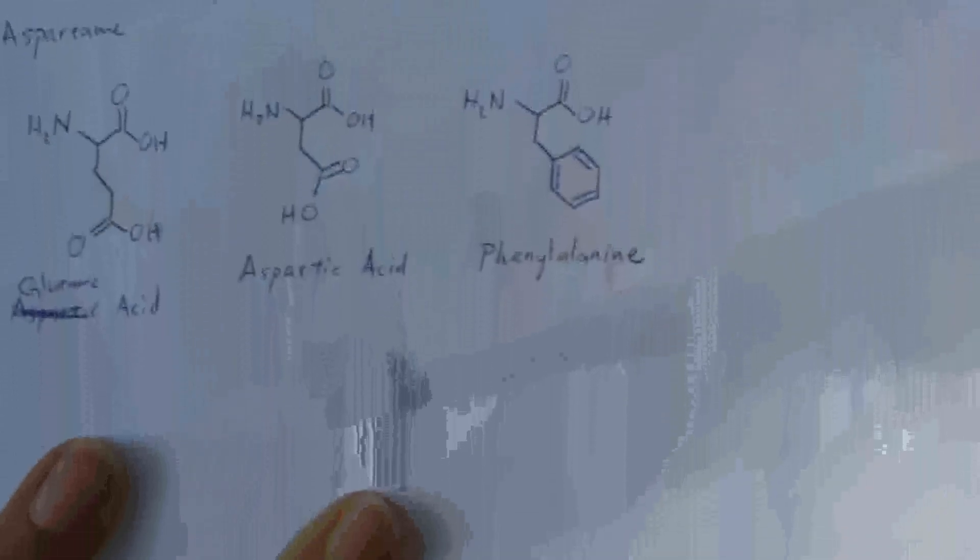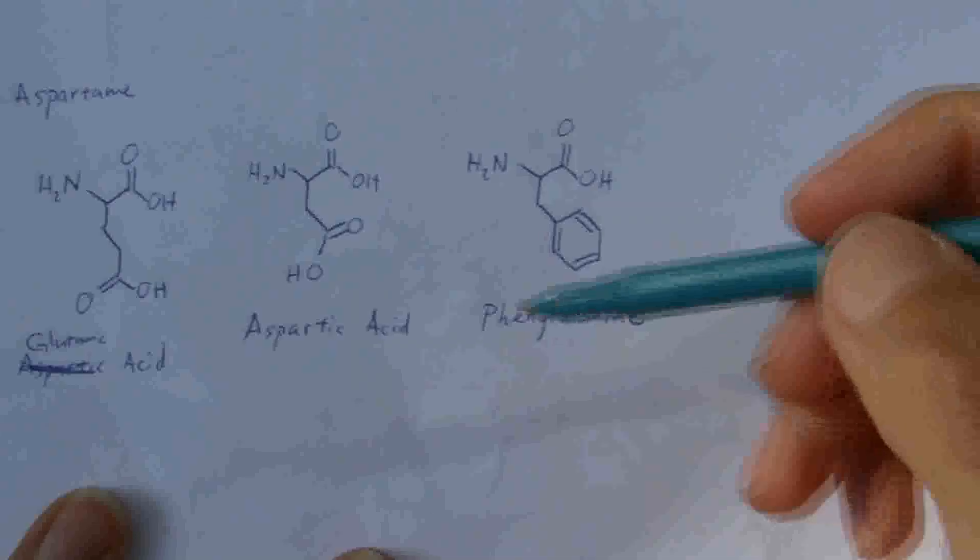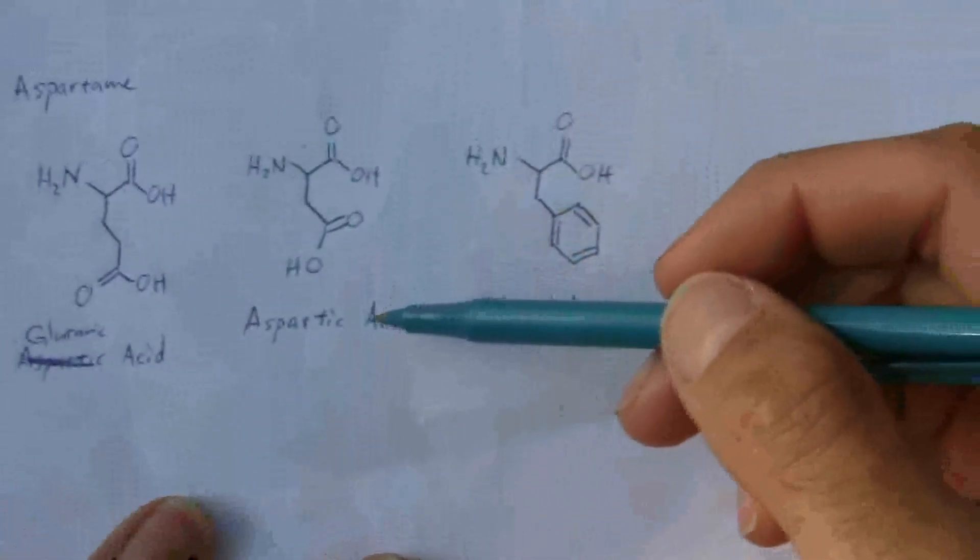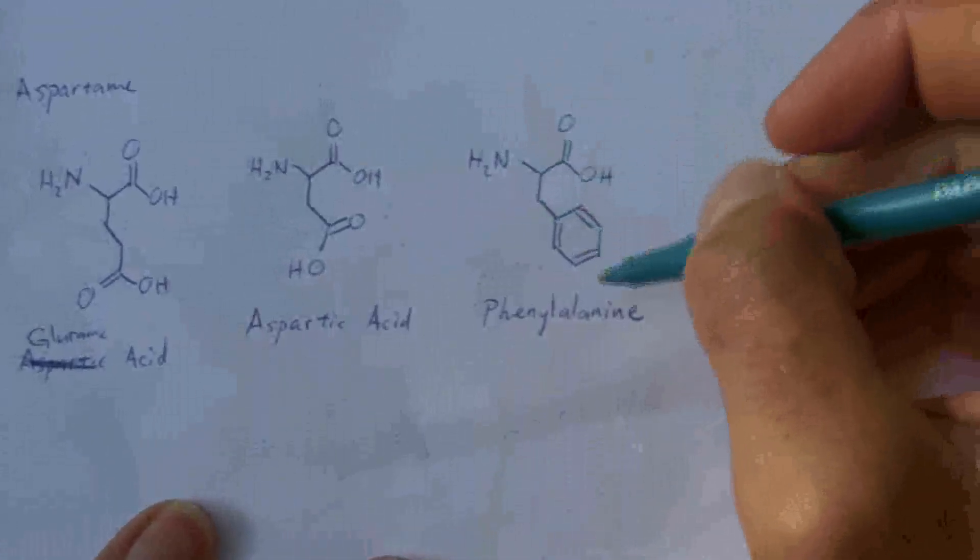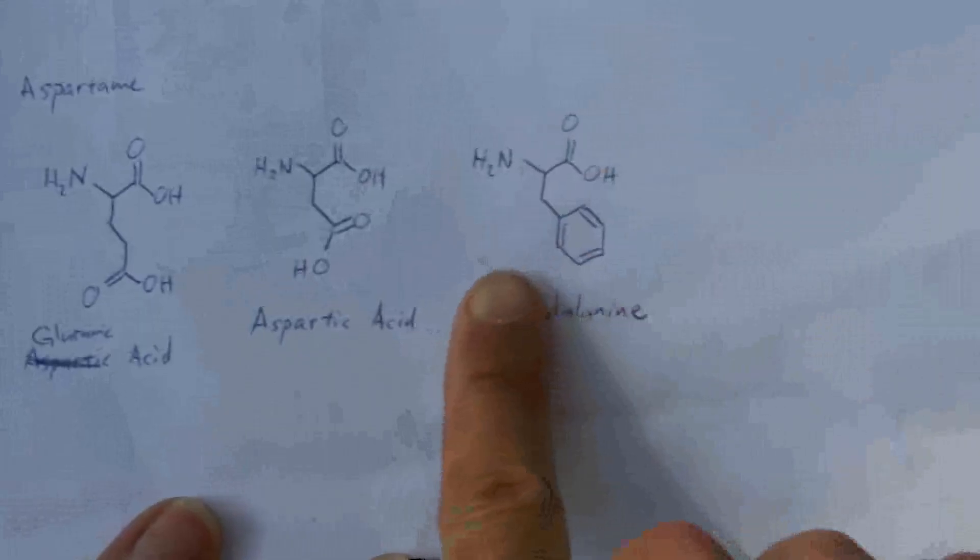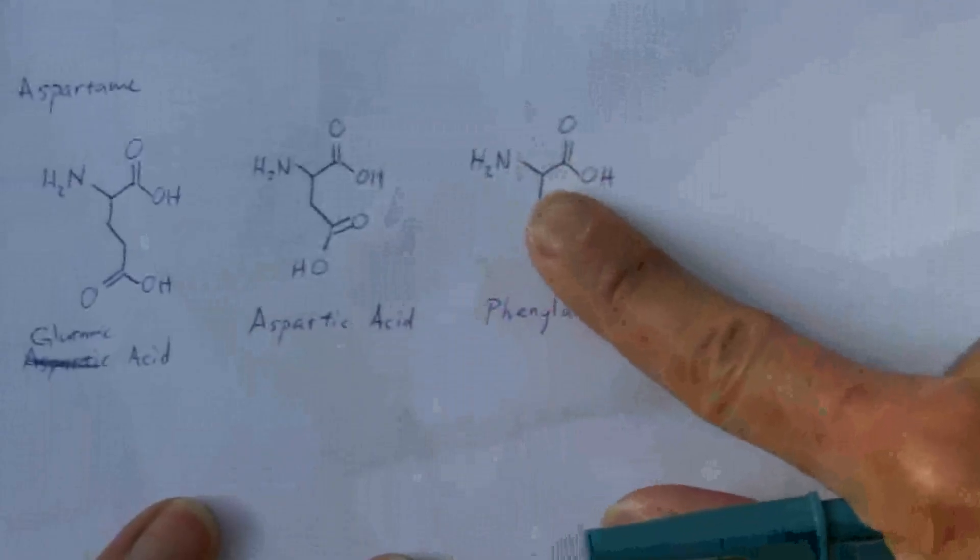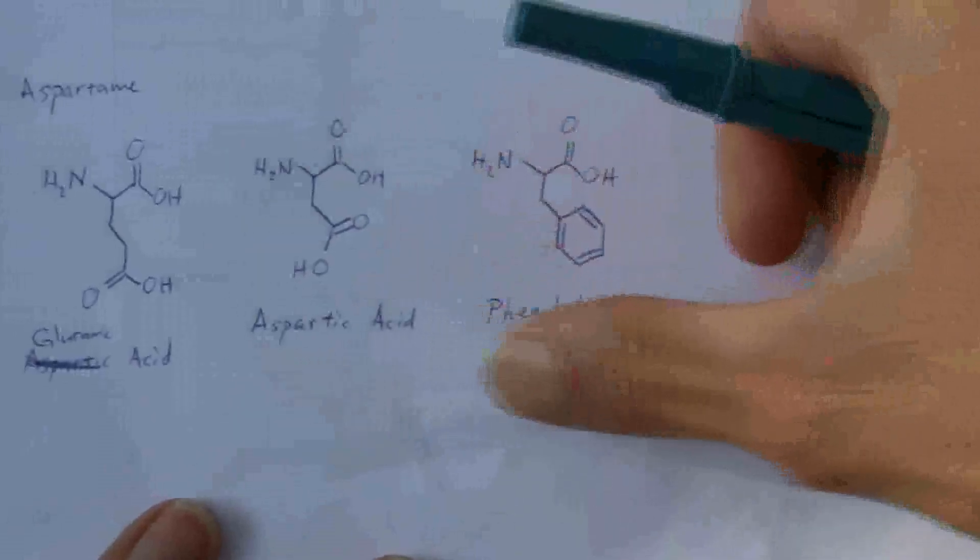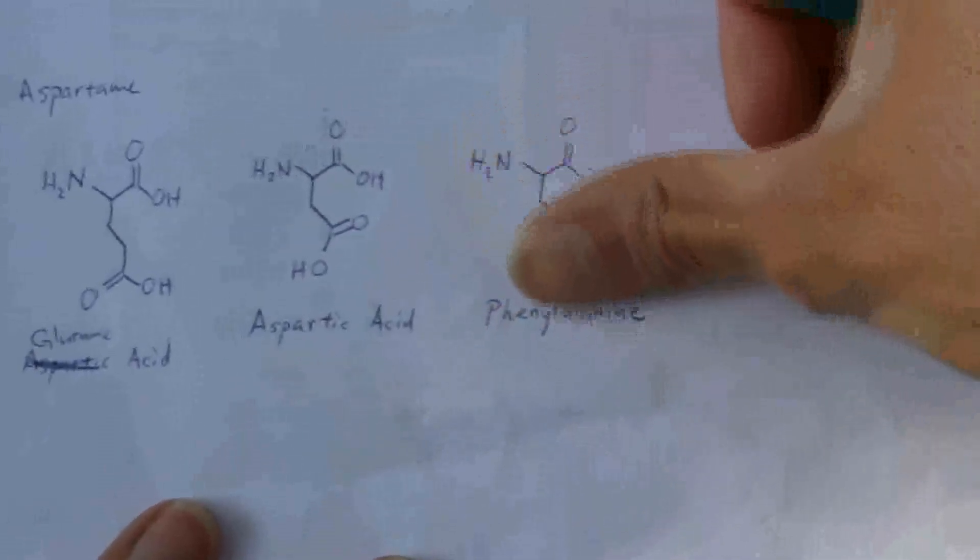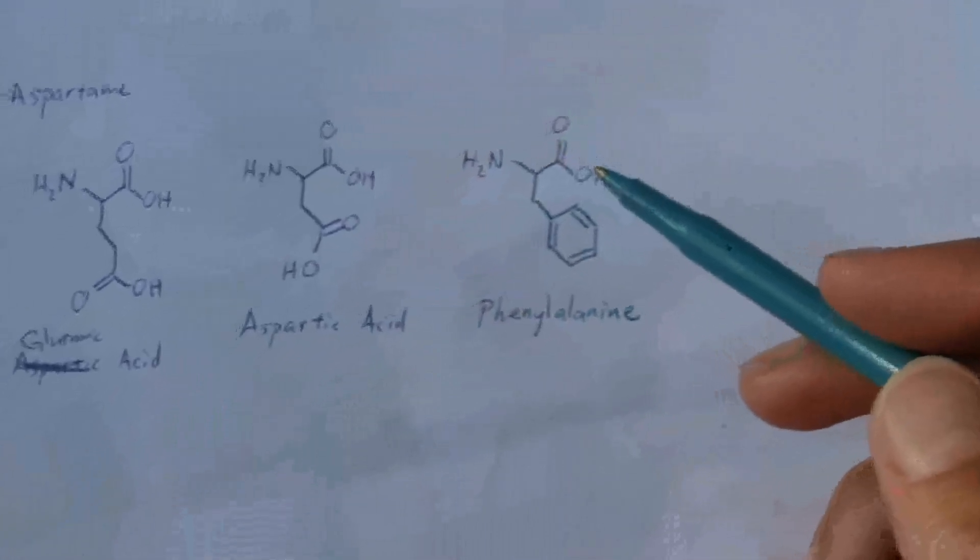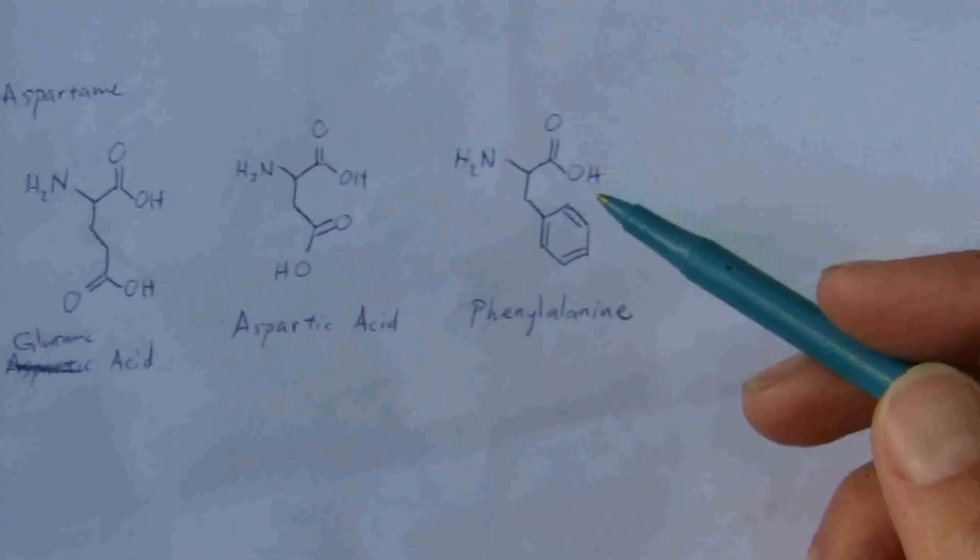Two amino acids, they're both used in the body. This one you have to get in your diet. This one, your body can manufacture on its own. And this phenylalanine, there's another amino acid, alanine, that looks like this, and then this is a phenyl group, so that's where that gets its name. It's phenylalanine, naming this substance.